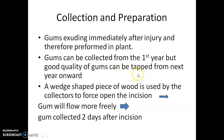For collection of the gum, a waist-shaped piece of wood is introduced for incision purposes by the collector, which gives force to open the incision. The gum will flow more freely after this process, and the gums are preferably collected two days after incision, although the gum starts flowing immediately after incision.